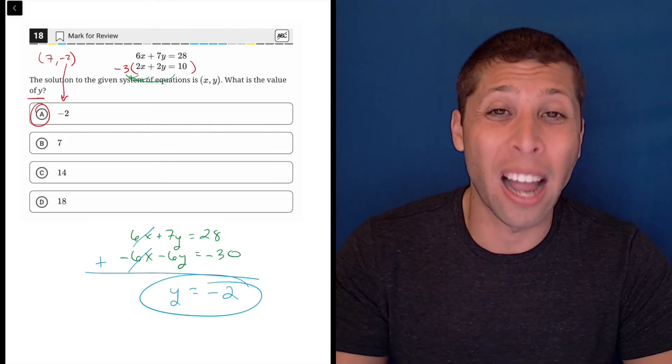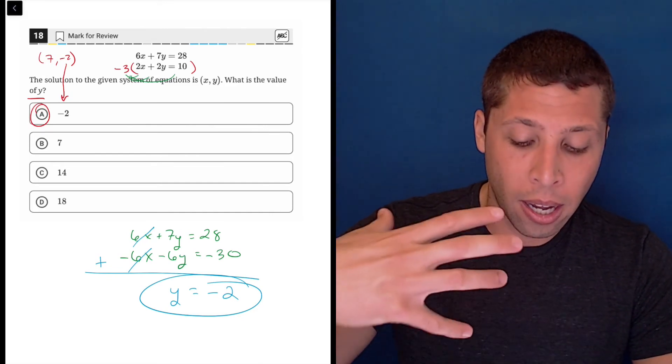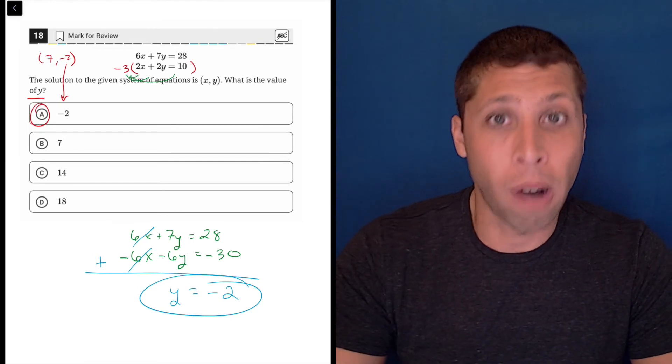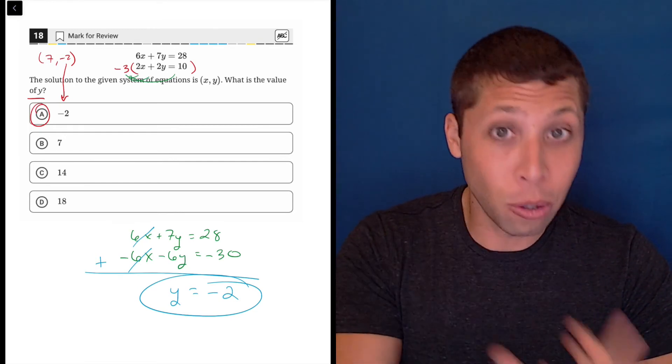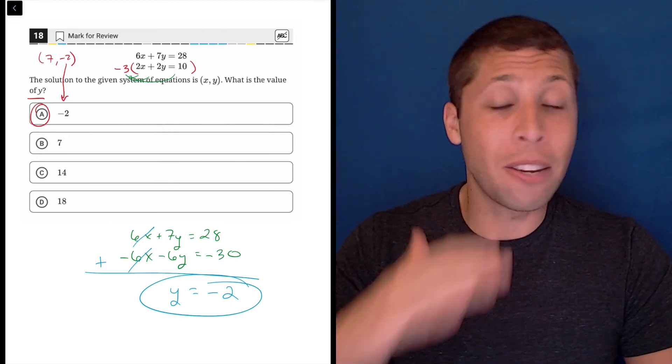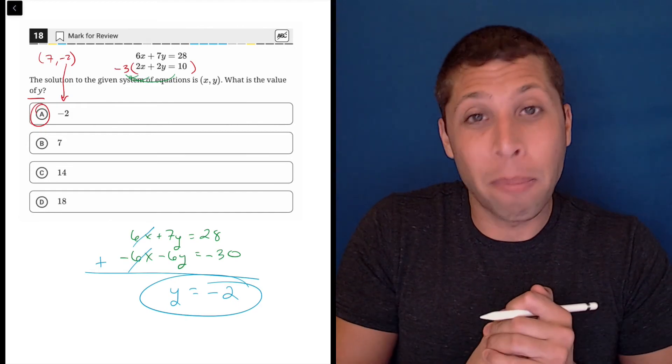You know, distribution is a high risk move in algebra. So there's a lot of things to these kinds of systems of equations questions that just could cause problems. And so the graphing solution is probably going to be the least risky for everybody. So now you know both, but I'd probably graph it.